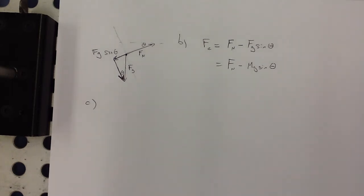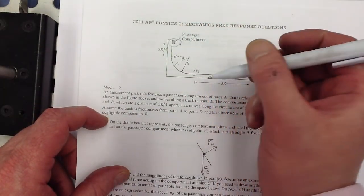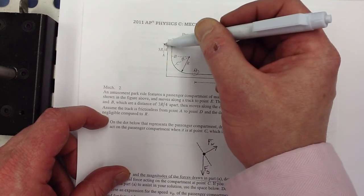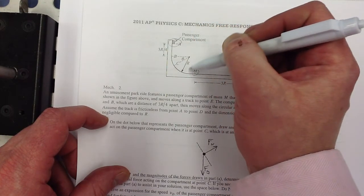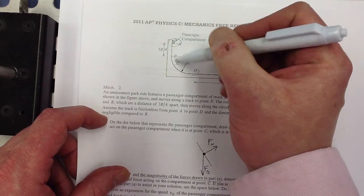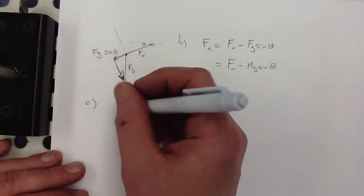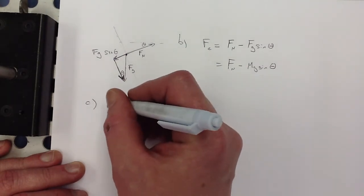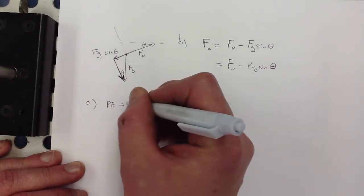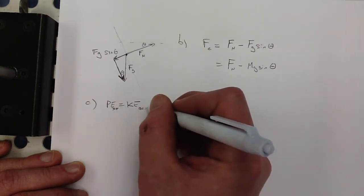Derive an expression for the speed of the passenger car as it reaches the point D. So that's from here to here. And that looks like it's dropping 3R over 4 and then another R. So I'm going to use energy considerations here because there's no friction. There's no energy leaking out of the system. So that means all this potential energy will turn into kinetic energy here. So I'm going to write that.